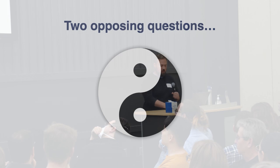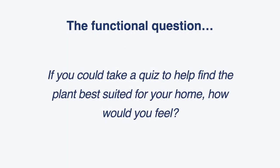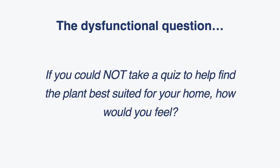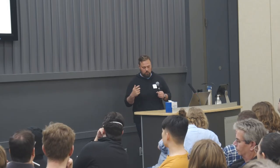To start categorizing these features, there are two opposing questions. There's the functional version: 'If you could take a quiz to help find the plant best suited for your home, how would that make you feel?' The inverse is the dysfunctional question: 'If you could not take a quiz to help find the plant best suited for your home, how would that make you feel?' By combining those two questions and examining the relationship between responses, you get a feel for what the feature does for satisfaction when present or absent.